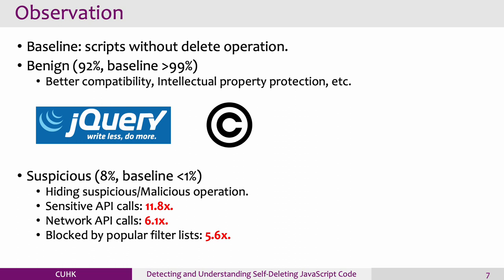It can also be used to protect intellectual property by hiding the core code on the page. However, we believe the other 8% of samples are attempting to hide suspicious or even malicious operations by deleting themselves. Our monitor reported that these scripts performed more sensitive API calls than normal ones, and they are also 5.6 times more likely to be included in popular filter lists. We hope that our initial investigation could shed light on this emerging problem and facilitate future research.